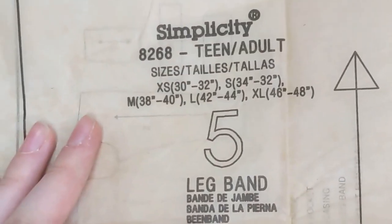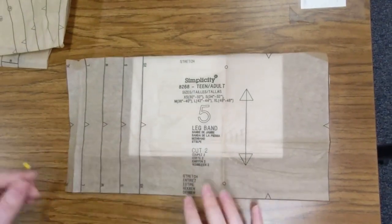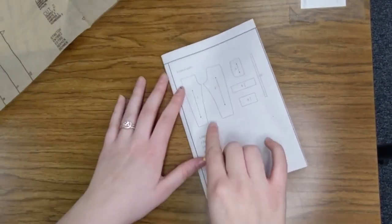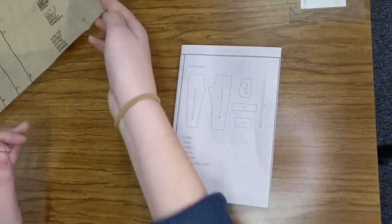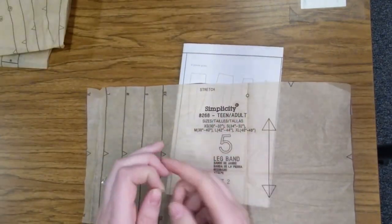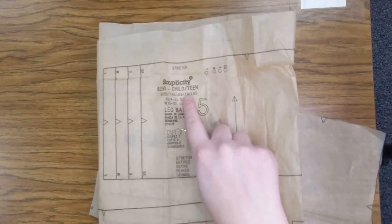So this is our pattern tissue. That was a little introduction. You're going to go ahead and cut out pieces 1, 2, 3, 4, 5, and 6 of your pattern. Make sure that it says teen slash adult, not child slash teen.